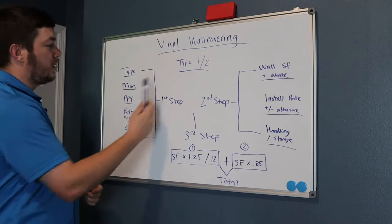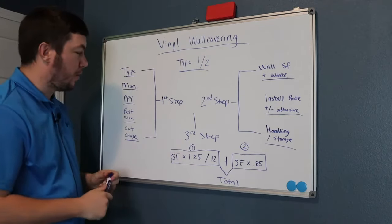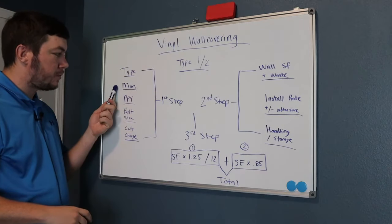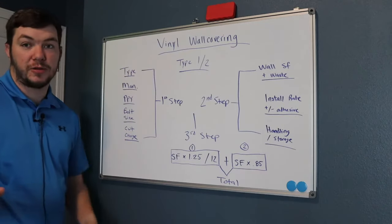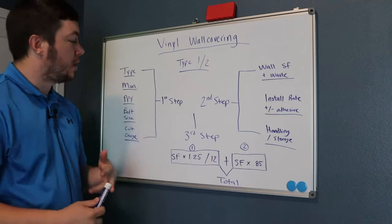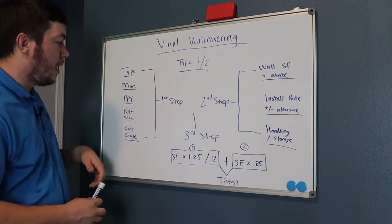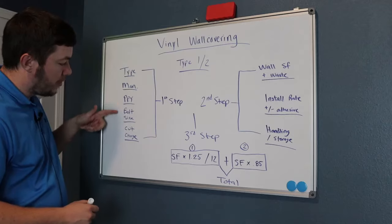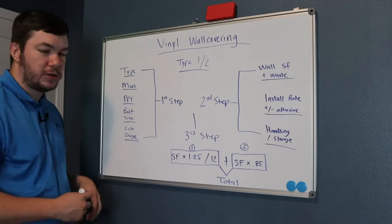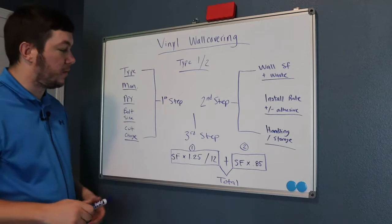You're going to need to know what type it is. The drawings will tell you, or the specification section, what manufacturer it is — MDC, Wolf Gordon, et cetera. The drawings will also tell you that. And then everything like price per yard, bolt size, and cut charge — those are things you'll find out from the manufacturers themselves.